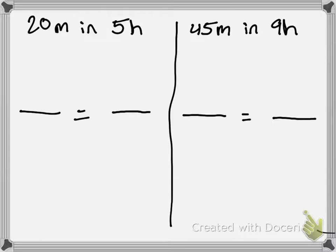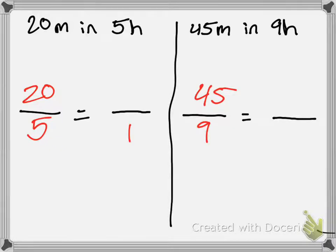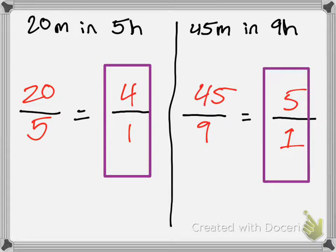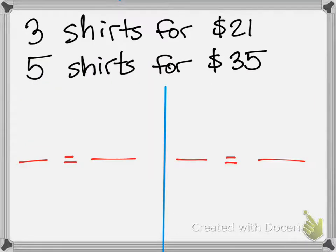Now we'll set up our initial ratios and simplify 20 over 5 and 45 over 9. The greatest common factor of 20 and 5 is 5, so it becomes 4 over 1. The greatest common factor between 45 and 9 is 9 — 9 divided by 9 is 1, and 45 divided by 9 is 5. So are these equivalent fractions? No, because 4 over 1 is not equal to 5 over 1.